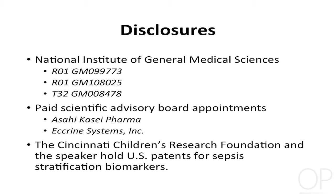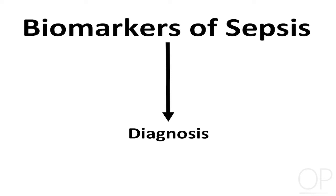Most of us, when we think about biomarkers of sepsis, we think of diagnosis — biomarkers to differentiate between SIRS and sepsis, or sterile inflammation and sepsis, as Dr. Peters spoke about earlier. This is a really important topic, but it's not what we're going to be focusing on.